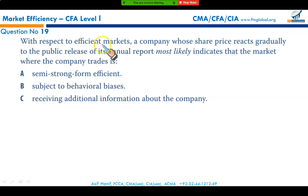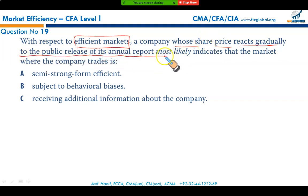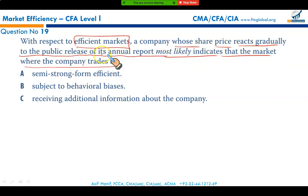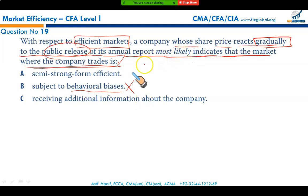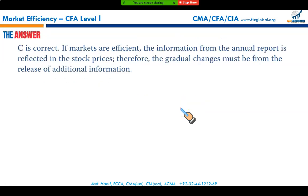With respect to efficient markets, a company whose share price reacts gradually to the public release of its annual report most likely indicates that the market is semi-strong inefficient. Had the market been semi-strong efficient, the publicly released information would have been immediately reflected in the share price. Instead, the share price reacts gradually as information becomes available, making option C the correct answer.